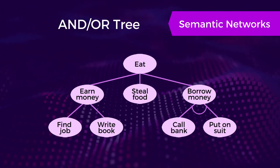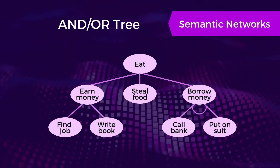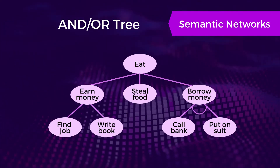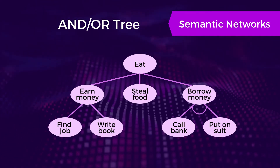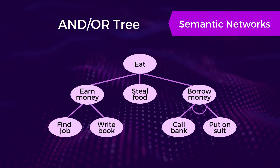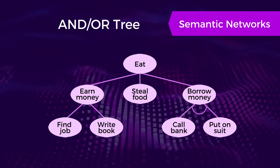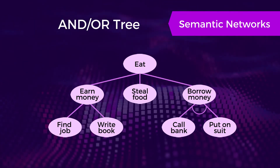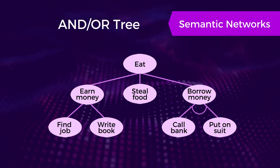There are various types of semantic networks. First is an or-tree. In this example, the tree is to find a way to eat. A normal arc means 'or', but an arc with a curve means 'and'. There are three options: to earn money, steal food, or borrow money. To earn money, you can either find a job or write a book. To borrow money, you need to call a bank and put on a suit.